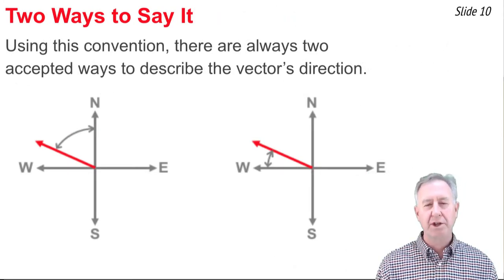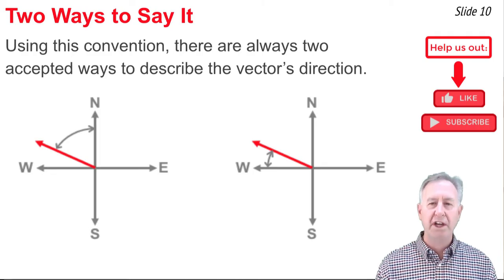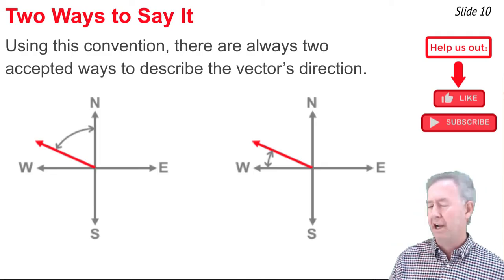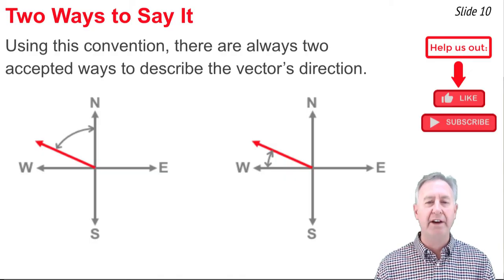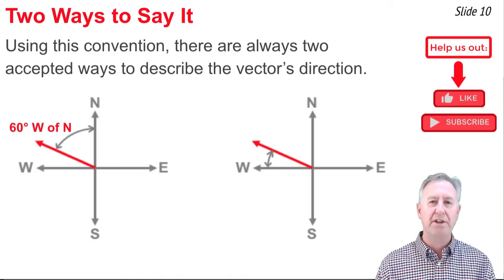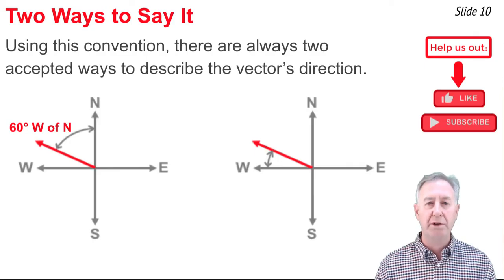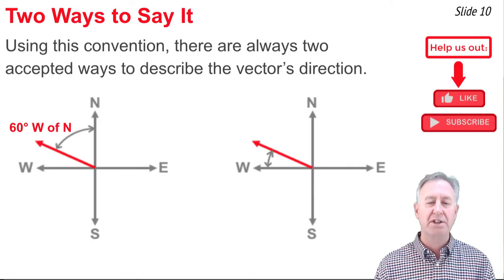When we use this convention, there are usually two ways of saying the same thing. For instance, if you look at this diagram, you'll notice there's a vector on the left that is described as being 60 degrees west of north. That is, starting from north, all we have to do is rotate the vector 60 degrees towards the west.